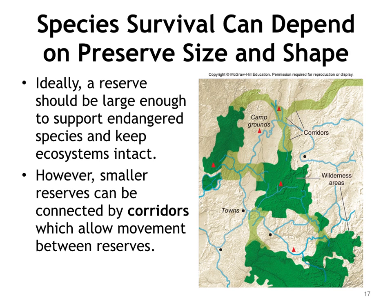Many natural parks and preserves are increasingly isolated remnant fragments of ecosystems that once extended over large areas. As park ecosystems are shrinking, they are becoming more and more important for maintaining biological diversity. Principles of landscape design and landscape structure become important in managing and restoring these shrinking islands of habitat. For years, conservation biologists have disputed whether it's better to have a single large or several small reserves — the SLOSS debate. Ideally, a reserve should be large enough to support viable populations of endangered species, keep ecosystems intact, and isolate critical core areas from damaging external forces.